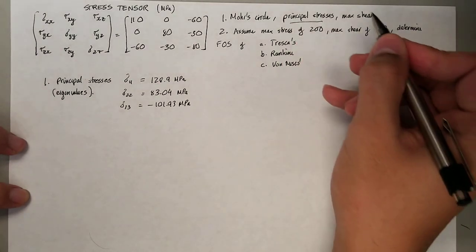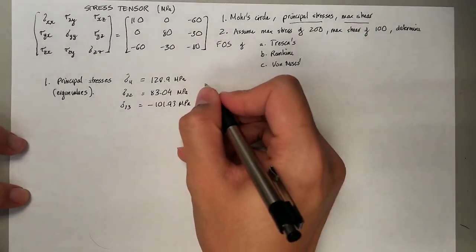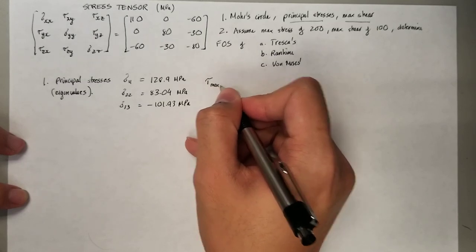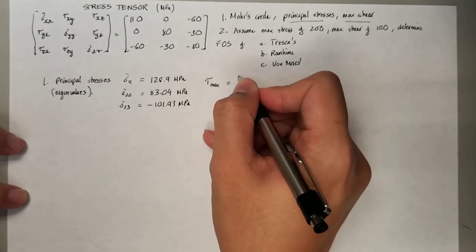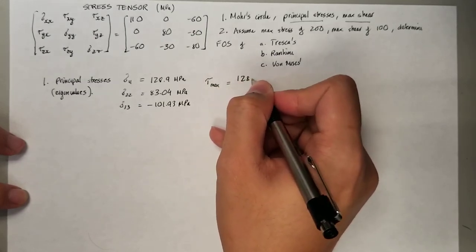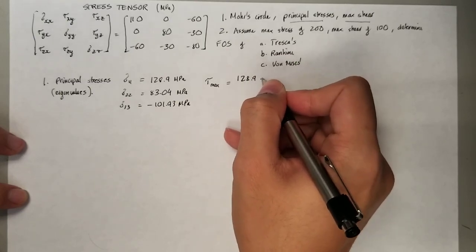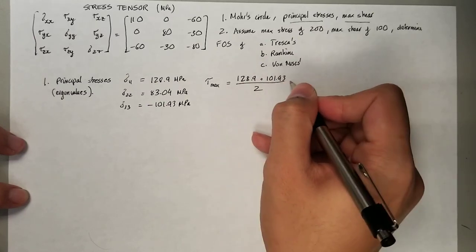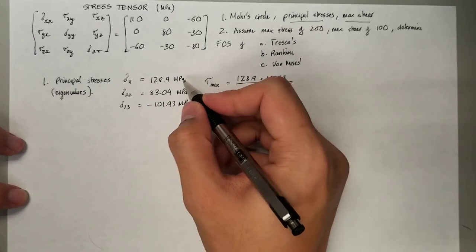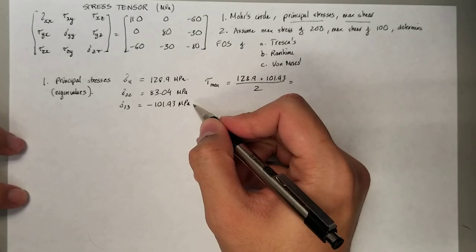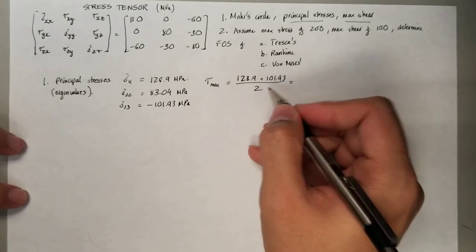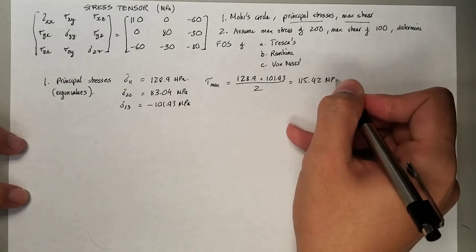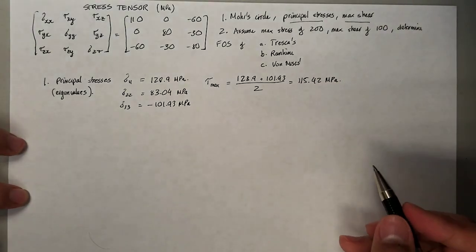Now that you've solved for the maximum principal stresses, you want to determine the maximum shear. According to the formula, the maximum shear occurs at the average of the maximum and minimum principal stress: it's the maximum minus the minimum divided by 2, which turns out to be 115.42 MPa.